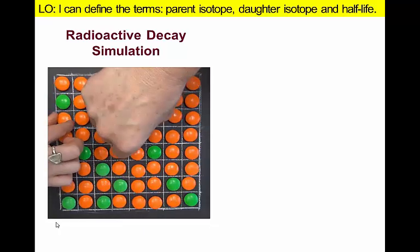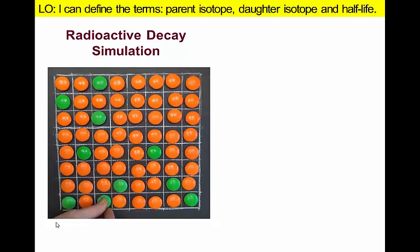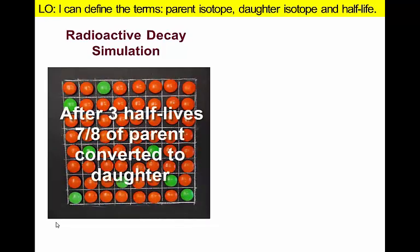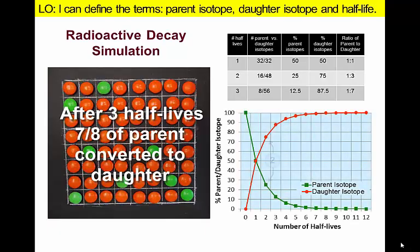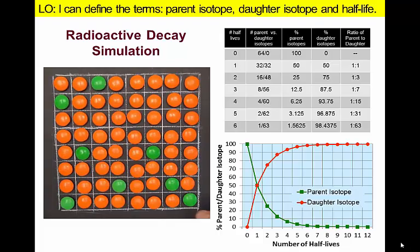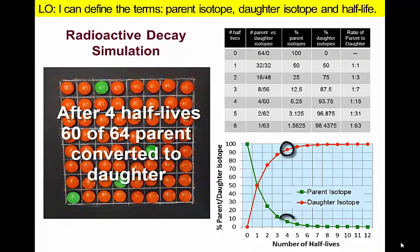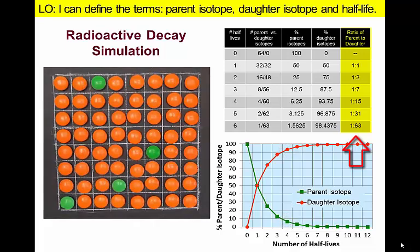During a third half-life, that quarter is again reduced by half. So after two half-lives, the proportion of parent isotope is reduced to a quarter of the original number, and to an eighth of the original number after three half-lives. As more time passes, there is a steady, predictable change in the relative proportion of parent and daughter isotopes as represented by their ratio. The ratios would be the same regardless of how many radioactive isotopes we began with.